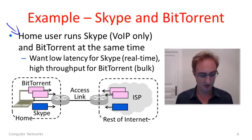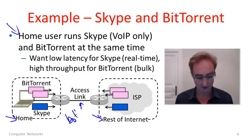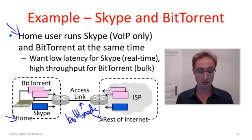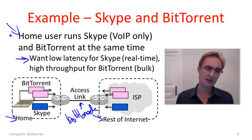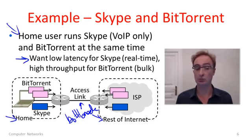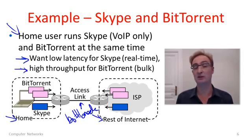Here's an example: you're at home running two applications at the same time — Skype and BitTorrent — across your access link, which is the bottleneck. Note that we want really different things for the different applications. Skype cares most about low latency and low loss so the call sounds good. BitTorrent doesn't care about delay variation at all — it wants to grab as much bandwidth as it can.